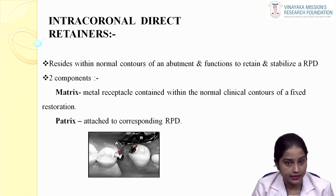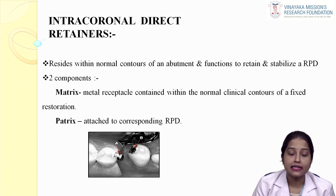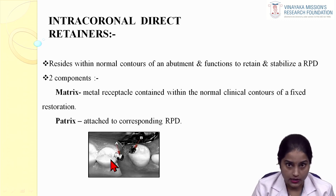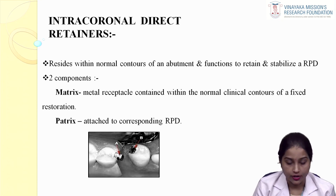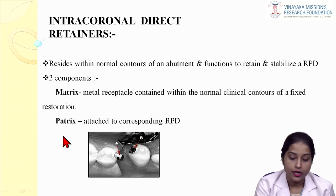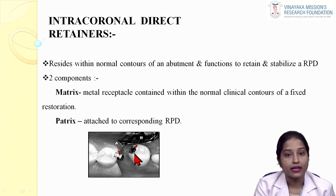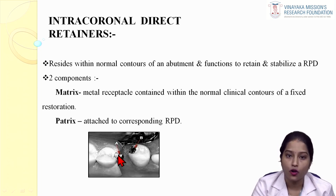Intracoronal direct retainers reside within the normal contour of an abutment tooth. An intracoronal direct retainer is mostly an attachment — a two-component system. One component is attached to the tooth and the other to the prosthesis. During insertion and removal, these two components come in contact with each other providing retention. A matrix — the female component — is placed within the contours of the clinical crown, and a patrix — the male component — is attached to the RPD, providing retention during insertion.